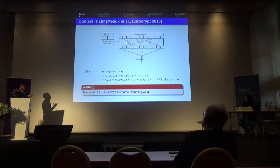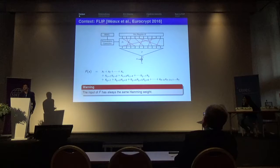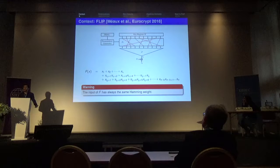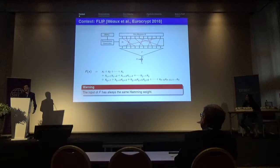However, when the secret key k is permuted, this does not imply that the input of f is uniformly distributed over the whole domain. In fact, since only a permutation of the bits is applied, the input of the filtering function always has the same Hamming weight. Therefore it is not sufficient to say the filtering function has nice cryptographic behavior, because the input of f is not uniformly distributed.